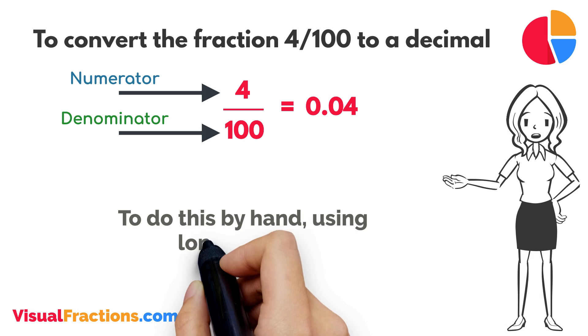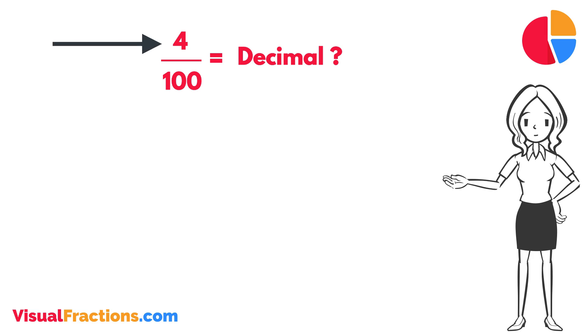To do this by hand using long division, we start by writing 4 as the dividend and 100 as the divisor. Since 100 doesn't fit into 4, we add a decimal point in our answer and append two zeros to 4, making it 400.